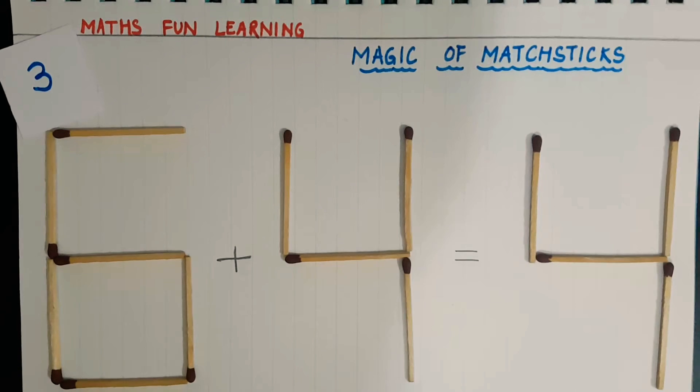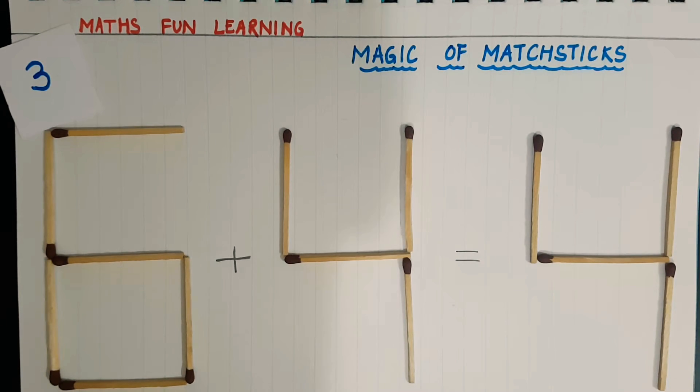So this is my third question. You can see here I made one addition fact. It says 6 plus 4 equals 4. Is it right? No, it is not correct. Yes, my next question is we have to move one matchstick to make this statement correct.